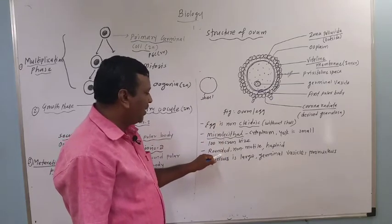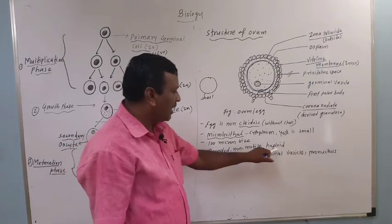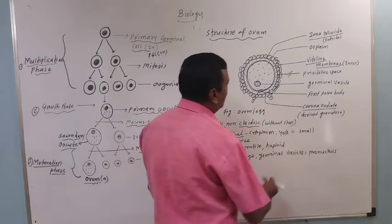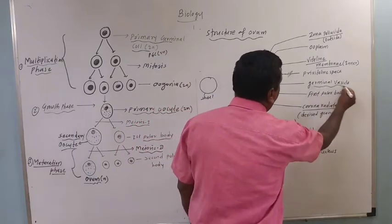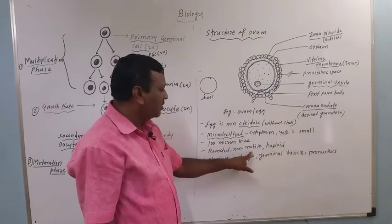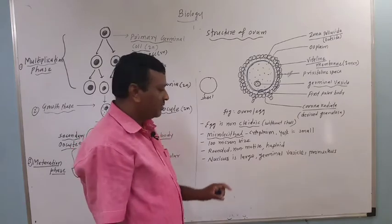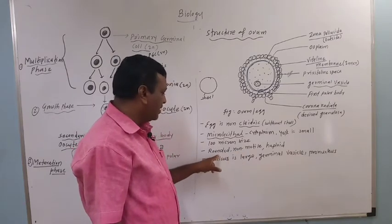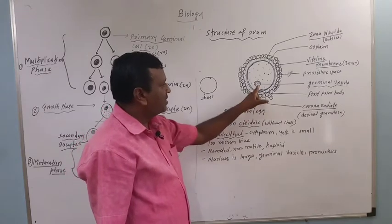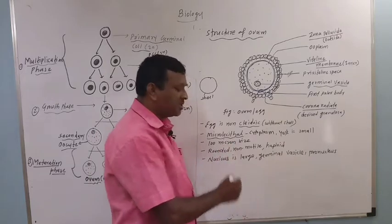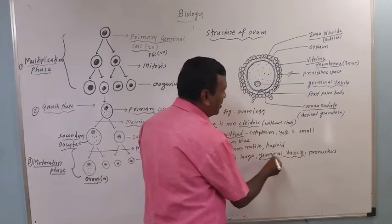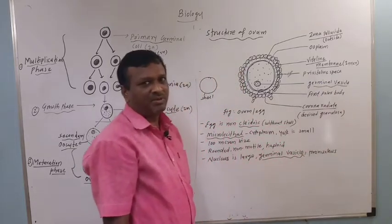The egg is rounded, non-motile, and haploid. It is haploid because there is a haploid nucleus present in the form of germinal vesicles. It is non-motile because it does not move from one place to another. It is rounded or circular in shape, with a large nucleus called germinal vesicles.